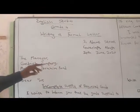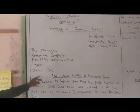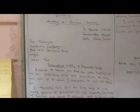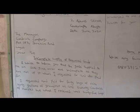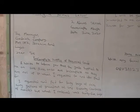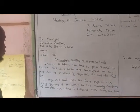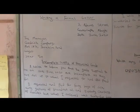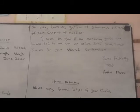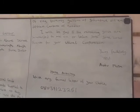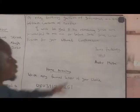Now let's look at the letter we have on the board. You can see starting with the writer's address, the date, the recipient and the recipient's address, our salutation and the topic — that is what the writer wants to talk about — which is 'Incomplete Supply of Requested Goods.' Now let's look at the letter proper: 'I write to inform you that the goods supplied to me on 20 June 2020 are incomplete as they are not up to what I requested for and also paid for. I requested and paid for 40 bags of rice, 30 gallons of granite oil and 20 cartons of noodles. But what I received was 35 bags of rice, 20 gallons of granite oil and 15 cartons of noodles. I will be glad if the remaining goods are forwarded to me on or before 30 June 2020. Thanks for your usual cooperation. Yours Faithfully.'